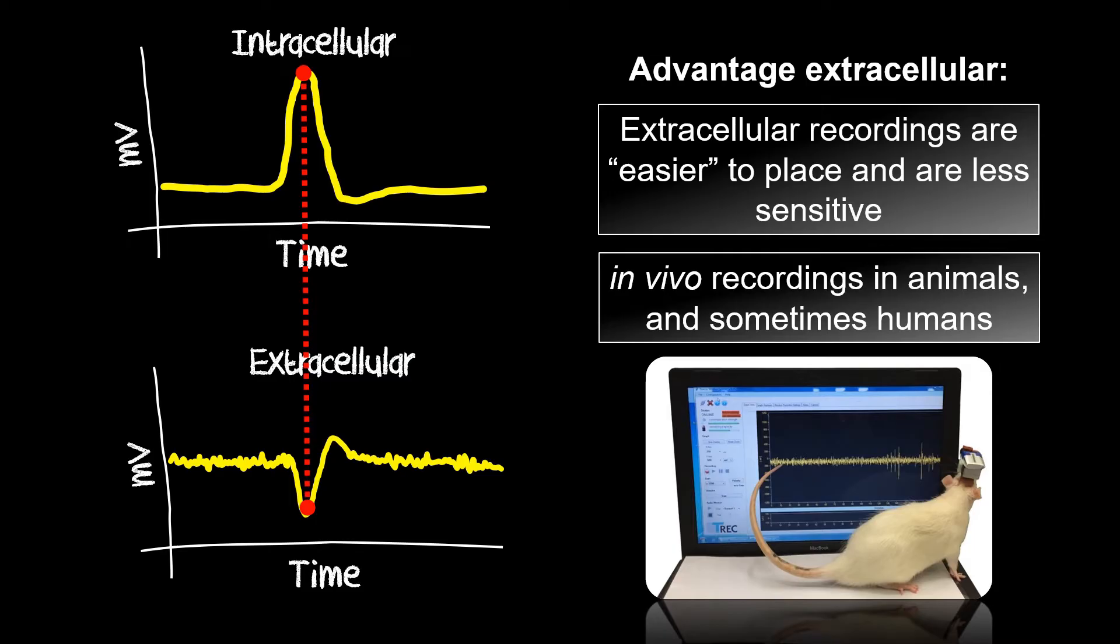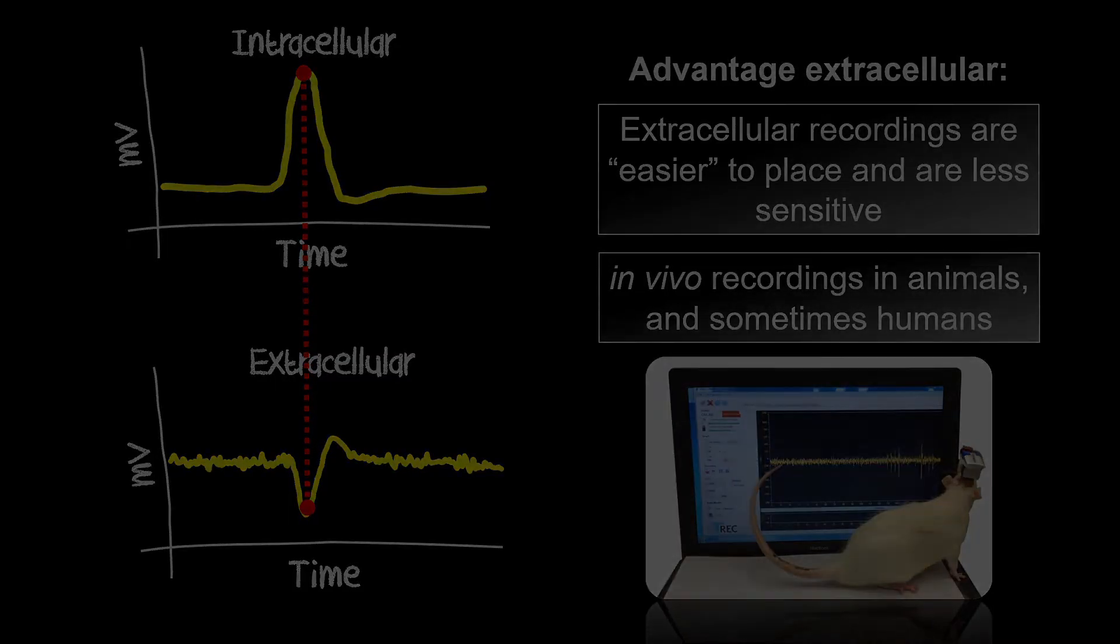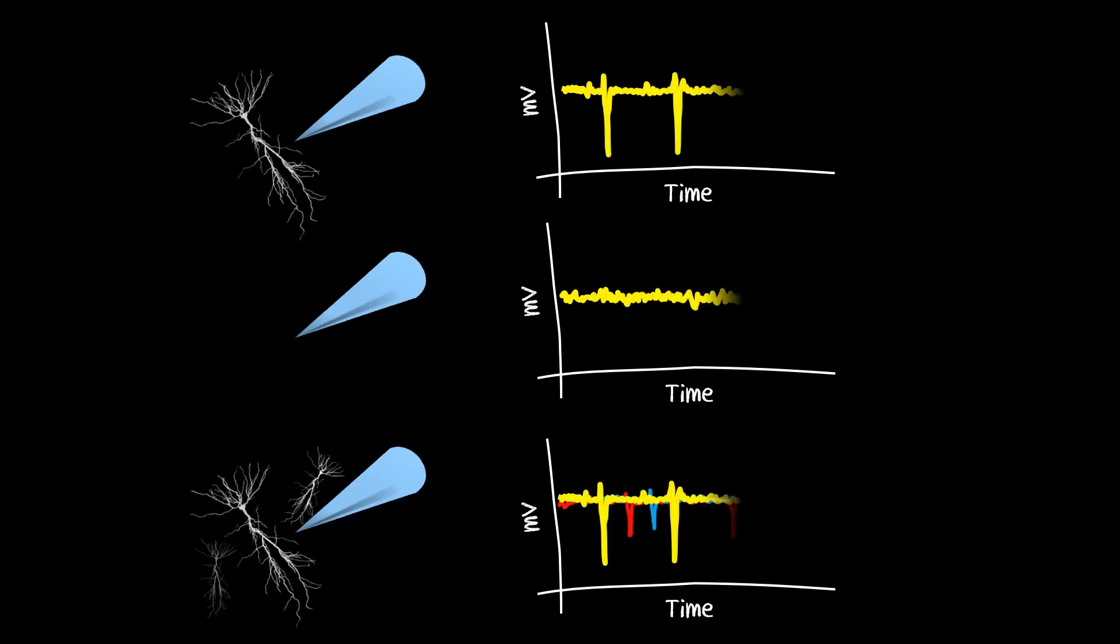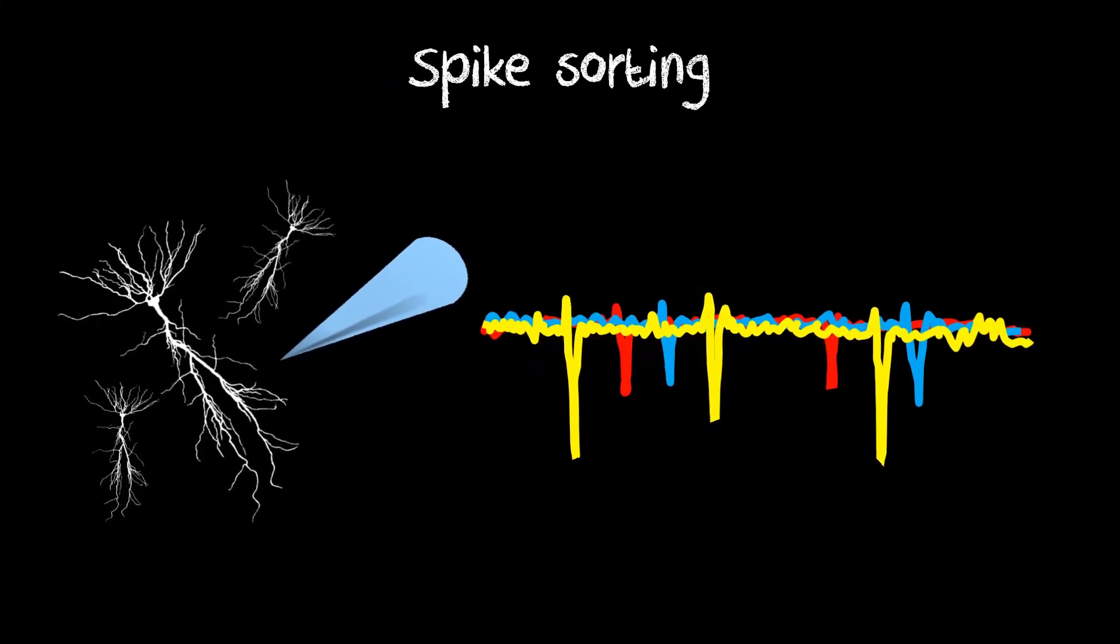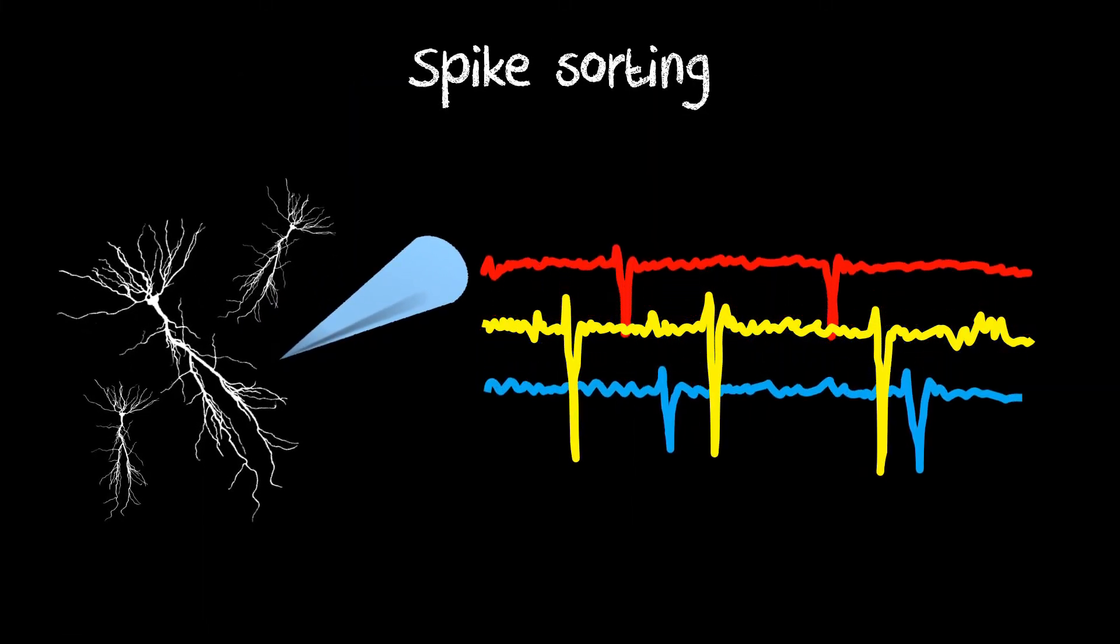After the data has been recorded, it needs to be analyzed. A single electrode can pick up activity from one cell, no cells at all, or a few cells at the same time. That is why the terminology single unit or single cell recording can be somewhat confusing. Therefore, we need a data processing step called spike sorting, which has as its goal to disentangle signals from different cells.